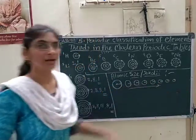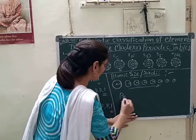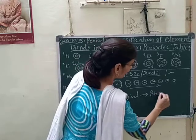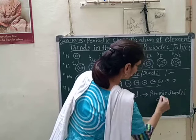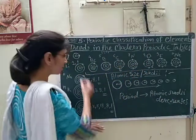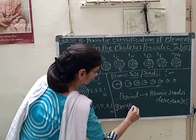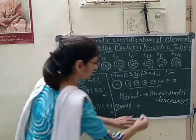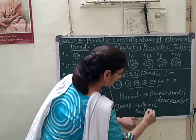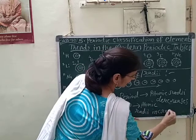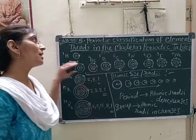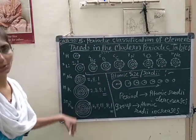So, atomic size decreases along the period. Along the group, atomic radii or atomic size increases. This is the trend of atomic size or atomic radii along the period and along the group.